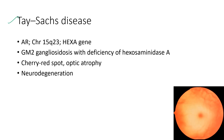Next is Tay-Sachs disease. It is an autosomal recessive condition — GM2 gangliosidosis with deficiency of hexosaminidase A. The ocular features include cherry-red spot and optic atrophy. It is also associated with neurodegeneration.